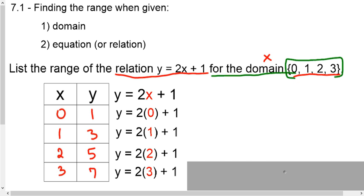And now we're ready to list our range. Our range is going to be, and remember last lesson we learned how to do this, we write out the word range, our colon, put a bracket, and then list your y values in least to greatest. So 1, 3, 5, and 7.